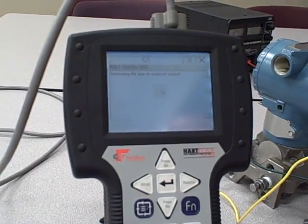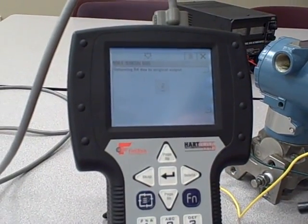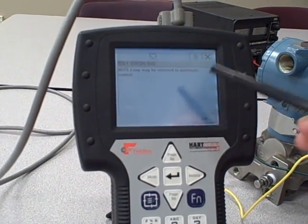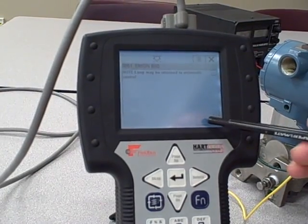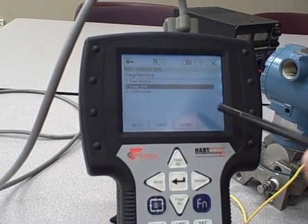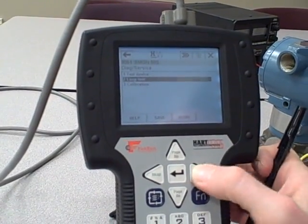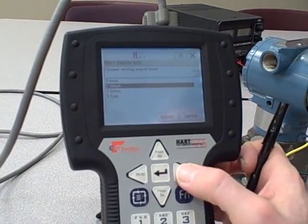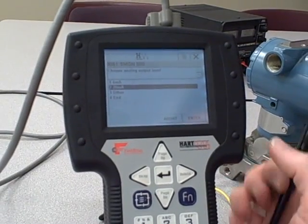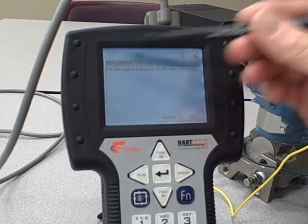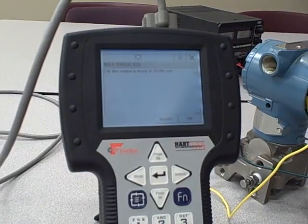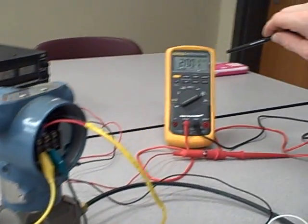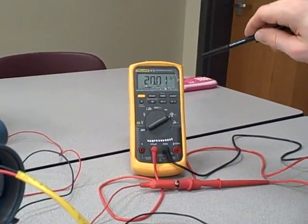Going back here, I can abort that test. It gives me another warning - loop may be returned to automatic control. I can go back into loop test and tell it to go to 20 milliamps. It says here, field device output is fixed at 20 milliamps. And there we go, 20 milliamps indicated on our Fluke meter.